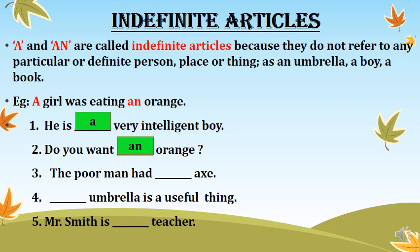'The poor man had dash axe.' Here 'axe' starts with the letter A, which is again a vowel, so we use 'an': 'The poor man had an axe.' Next: 'Dash umbrella is a useful thing' — the answer is 'An umbrella is a useful thing.' Finally: 'Mr. Smith is dash teacher.' Teacher starts with T, which is a consonant, so we use 'a': 'Mr. Smith is a teacher.'